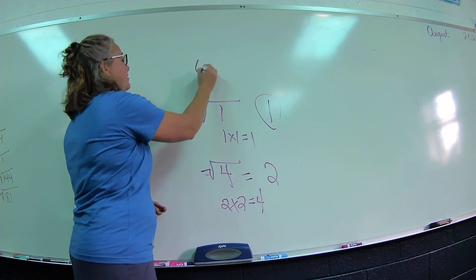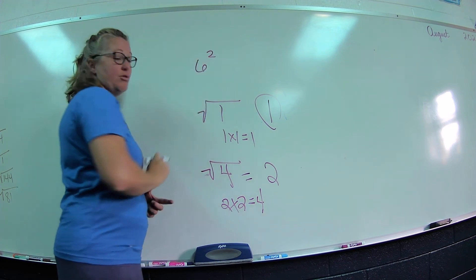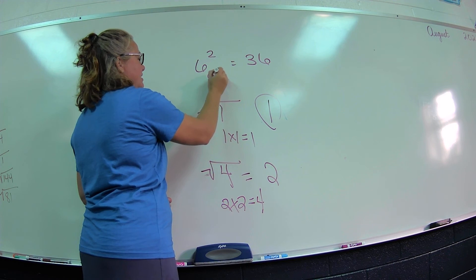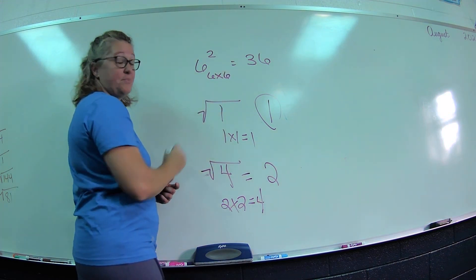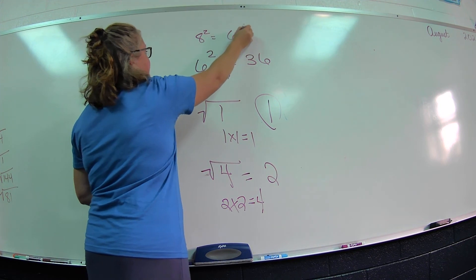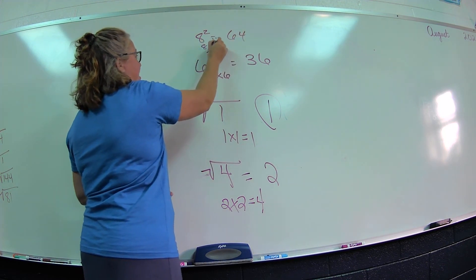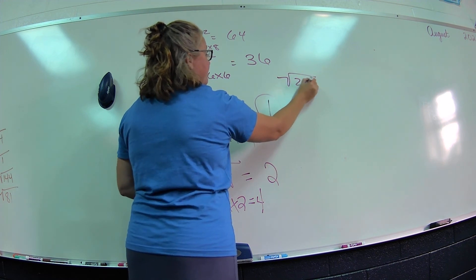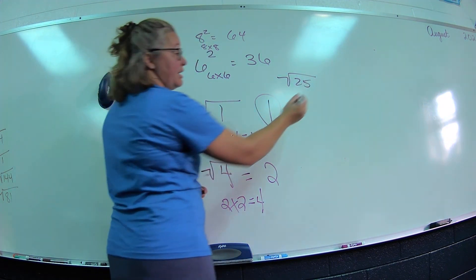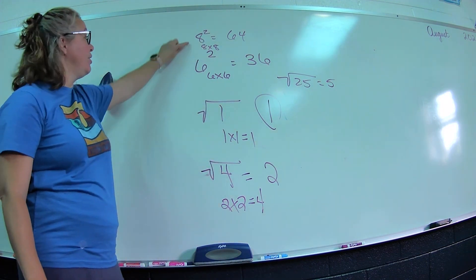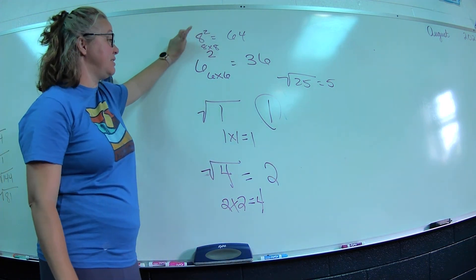Again, if you have 6 as a base and you square it, that is 36 because 6 times 6. If you have 8 squared, 64—that's 8 times 8. A square root of 25 would be 5. Remember, squares are the number times itself.